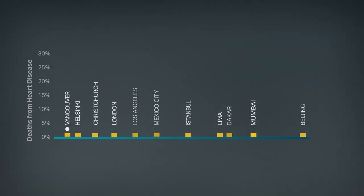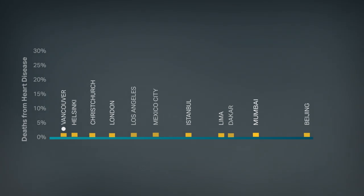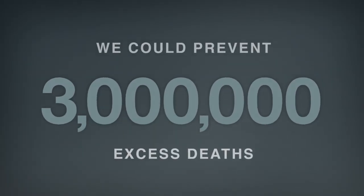If we decrease particles around the world to levels found in Vancouver, we could prevent 3 million excess deaths every year.